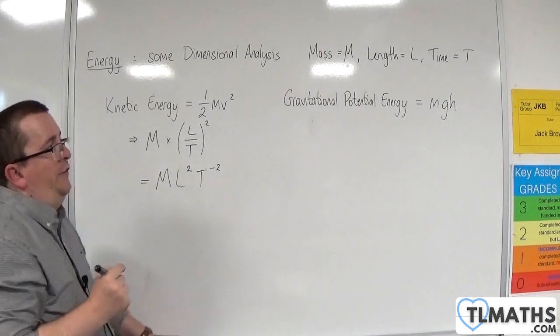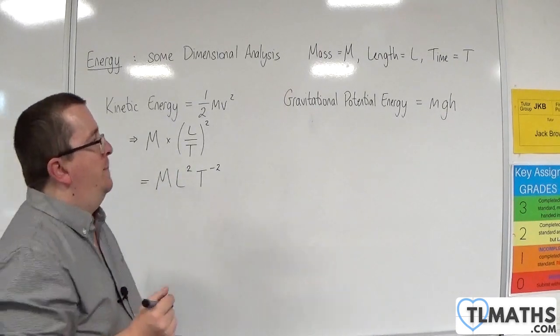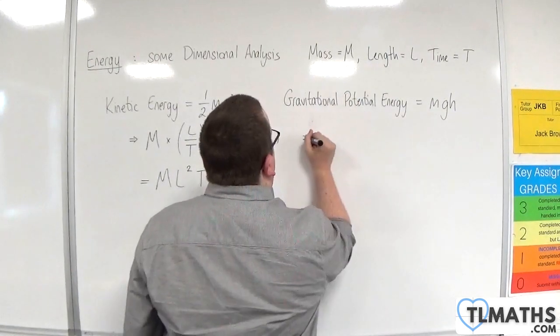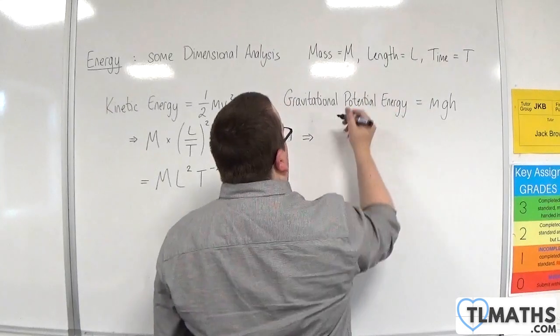Now, let's consider gravitational potential energy, which has the formula MGH. So mass, capital M.